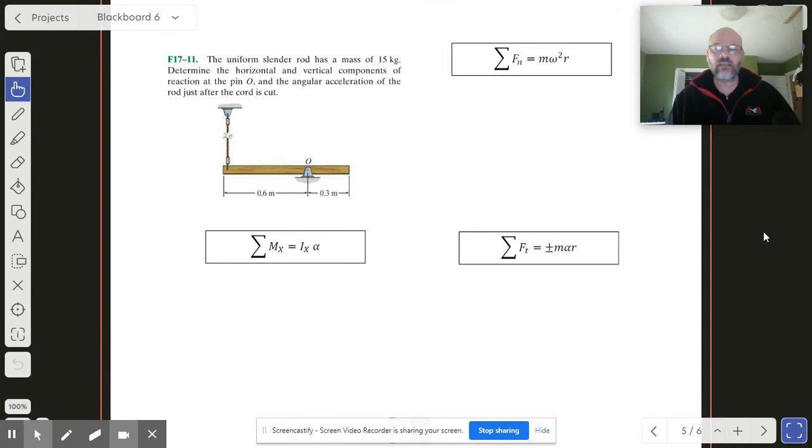So number 11 is very similar to the one that we just did. It's not rotating in the beginning and it's pivoting in a different place, but the idea is that this rod here had been suspended and then it was just released and so it was able to rotate down at will. Our job is to figure out what's happening at the axle O and what is the angular acceleration of the rod.